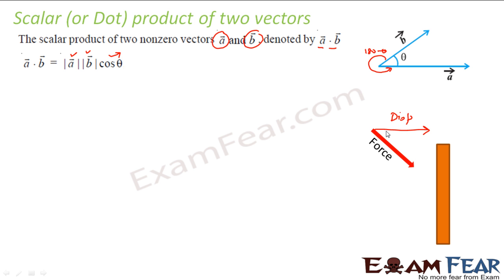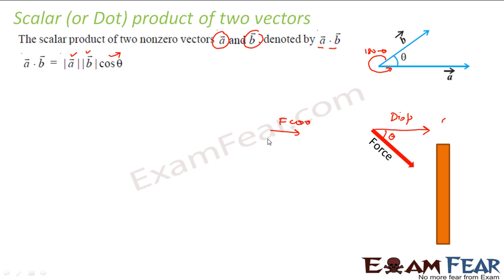Let's assume theta is the angle between them. So if you observe carefully, I can break this force into two parts. This direction will have an F cos theta component, and this component will be F sin theta.